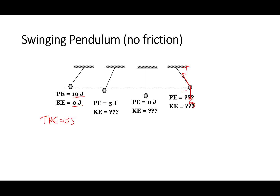So if we have 10 joules total, at this point we have 5 joules of potential, which means kinetic energy is just 5 joules. At its lowest point, it is at 0 potential energy, which means all of that energy has to be kinetic — so the kinetic energy is 10 joules. And at this point, since it's the same height that it originally was, it's the same potential energy, which is 10 joules, and the kinetic energy is going to be 0 joules because there's no energy left over for kinetic — it's going to be at its maximum height.